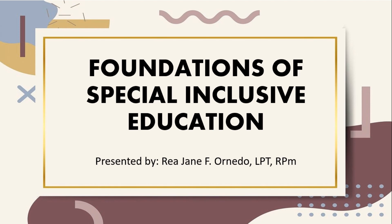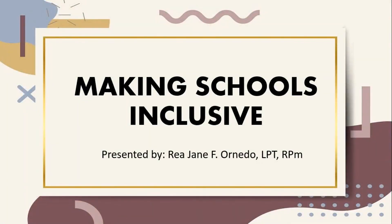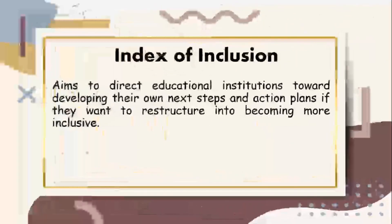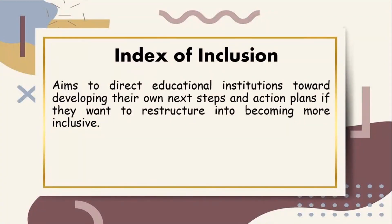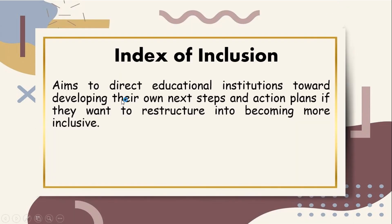This topic will entirely be based on the Booth and Ainscow framework to help schools determine their next steps in shifting to a more inclusive setting. We will talk about Making Schools Inclusive. In 2002, Booth and Ainscow came up with what we call the Index of Inclusion, which aims to direct educational institutions toward developing their own next steps and action plans if they want to restructure into becoming more inclusive. It takes on the social model of disability as its starting point.